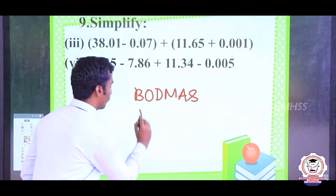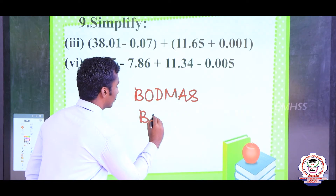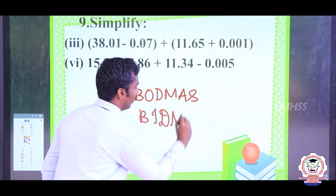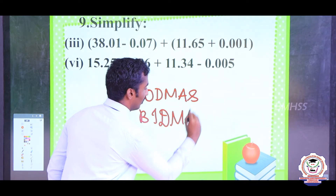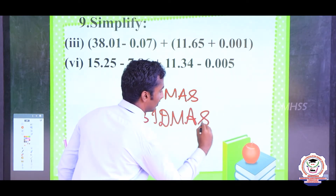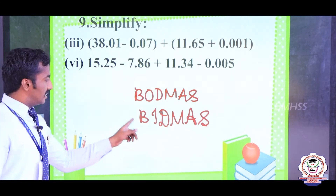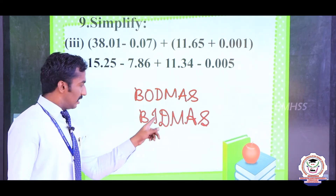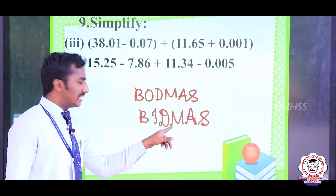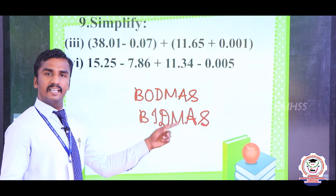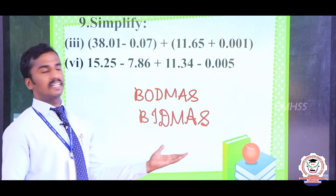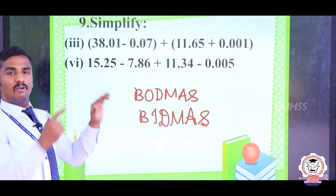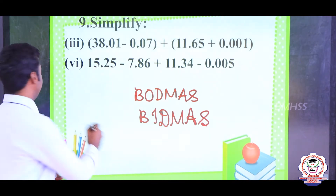One more thing — BIDMAS: B means Bracket, I means Indices, D means Division, M means Multiplication, A means Addition, S means Subtraction. So, using BODMAS or BIDMAS, we have to simplify the bracket value first.